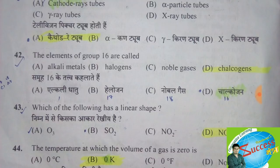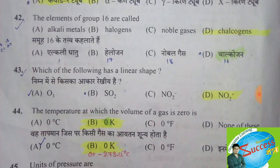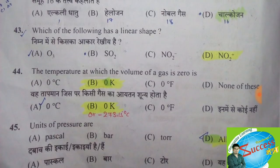Group 18 is known as noble gases, group 17 are halogens, and group 1 are alkali and alkaline metals. Which of the following has a linear shape? The correct answer is option D, NO2 positive.